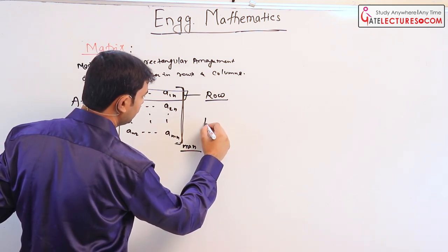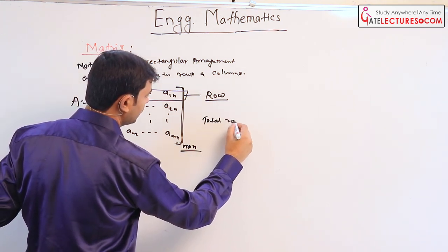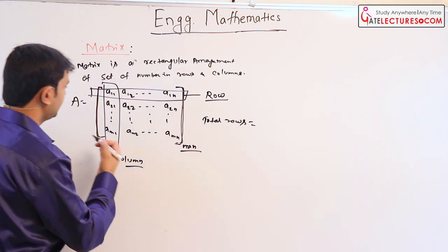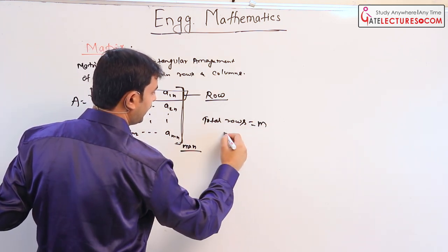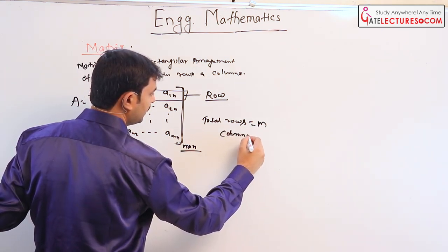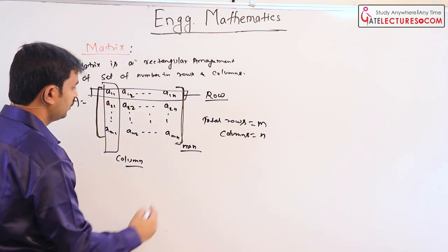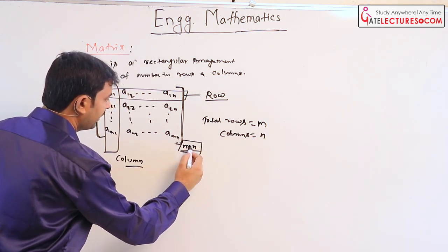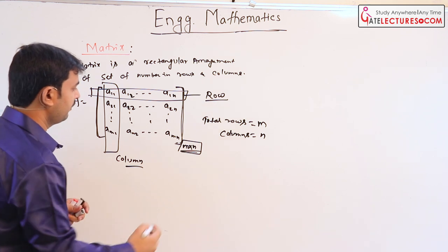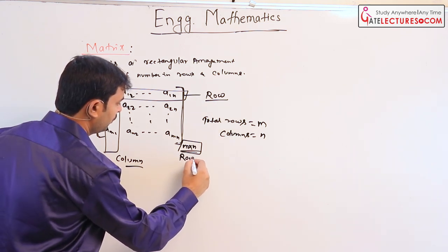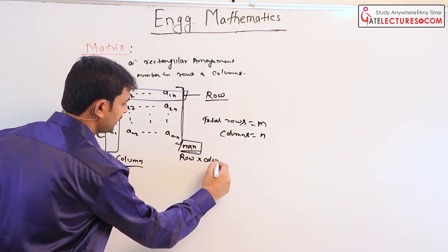Total number of rows in this example is m and columns is n. So here, this is m by n order, written as row first, then column. This is the representation of order of a matrix.